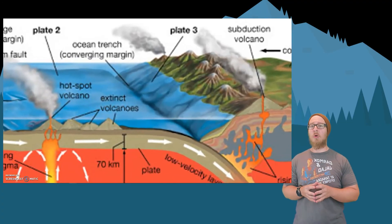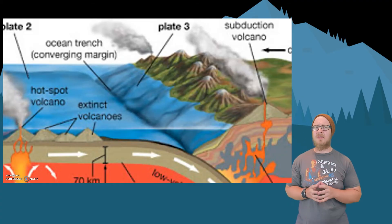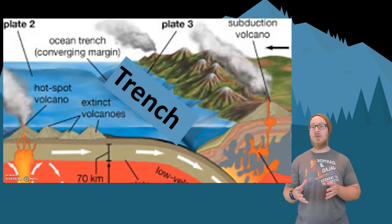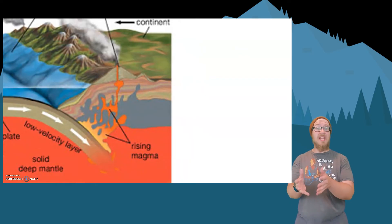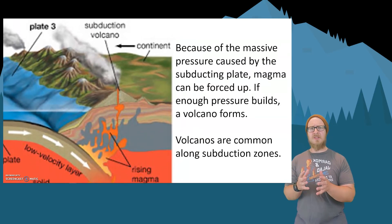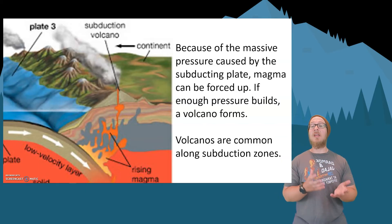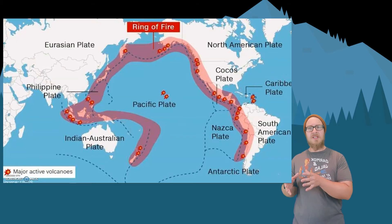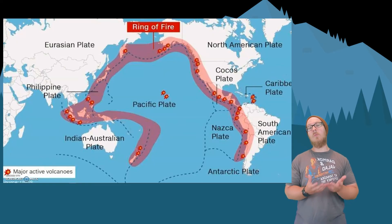Let's zoom in once more into subduction zones. As one plate slides below the other, it pulls a little bit of the continental plate down and causes it to fold downwards at the edge. This sinking creates a trench, and trenches are some of the deepest places in the world. Also along subduction zones, you'll notice a lot of volcanoes — because of all the pressure caused by the subducting plate, magma is forced upwards, and if enough pressure builds up, a volcano can form. A great example is around the Pacific Ocean, where the Pacific Plate subducts under many other plates. This collection of volcanoes is what we call the Ring of Fire.